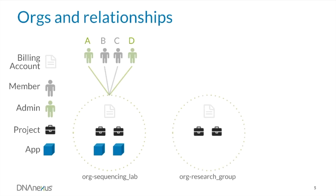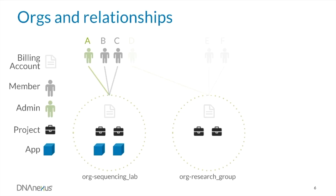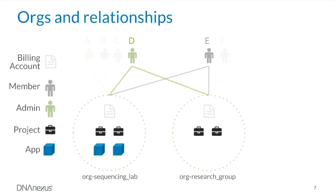We can make user D an admin of both groups. She can add user E to both Org Sequencing Lab and Org Research Group, and add user F to Org Research Group. Looking at each user's permissions: users A, B, and C only have access to Org Sequencing Lab; users D and E have access to both orgs; while user F only has access to Org Research Group.